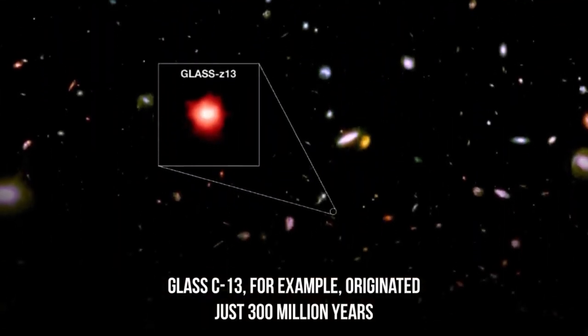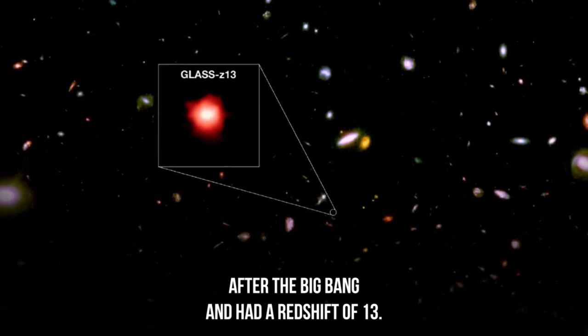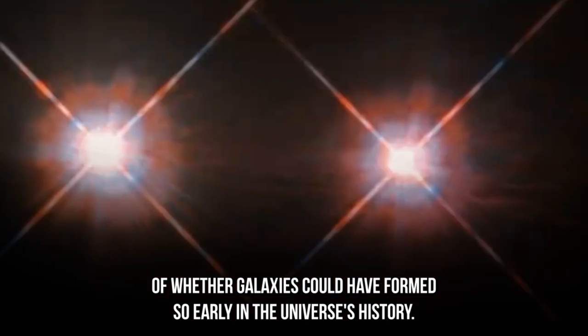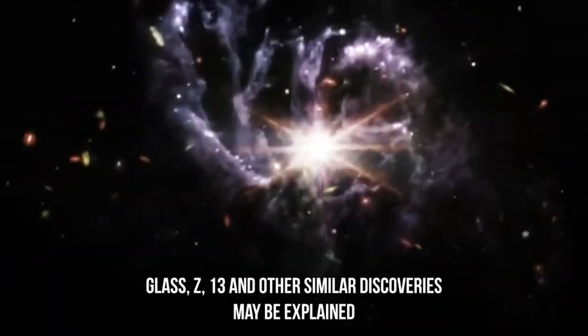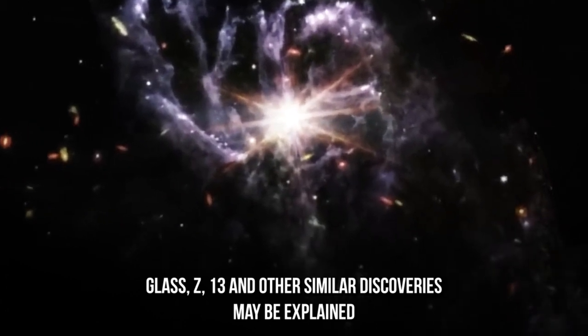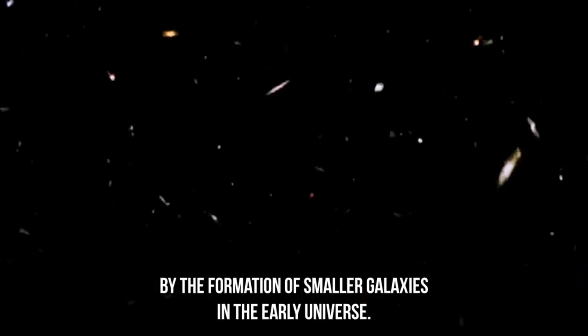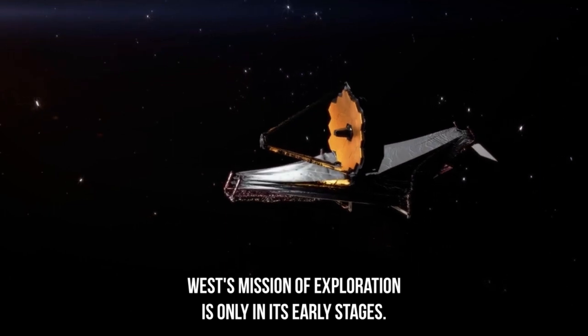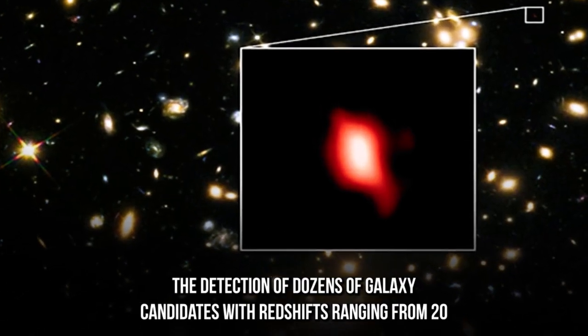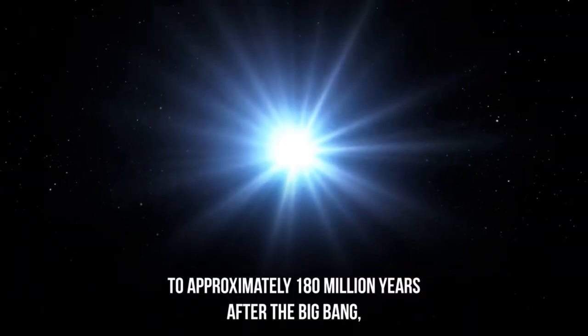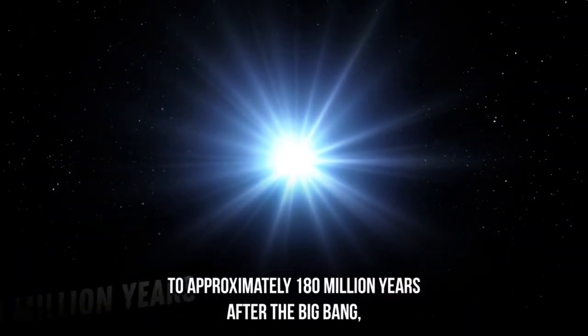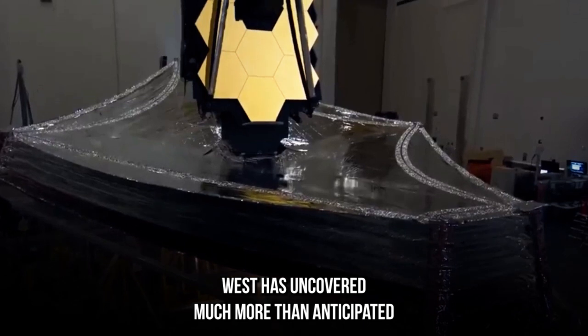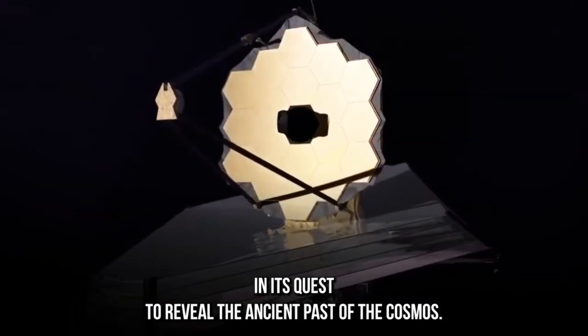GLASS-z13, for example, originated just 300 million years after the Big Bang and had a redshift of 13. This challenges the notion of whether galaxies could have formed so early in the universe's history. GLASS-z13 and other similar discoveries may be explained by the formation of smaller galaxies in the early universe. However, the JWST's mission of exploration is only in its early stages. The detection of dozens of galaxy candidates with redshifts ranging from 20 to approximately 180 million years after the Big Bang suggests that there is still much to uncover. The JWST has uncovered much more than anticipated in its quest to reveal the ancient past of the cosmos.